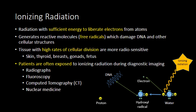Patients are most commonly exposed to ionizing radiation through four main imaging modalities: radiographs, like chest radiographs or radiographs of the extremities; fluoroscopy; computed tomography, most commonly thought of as CT; and nuclear medicine.